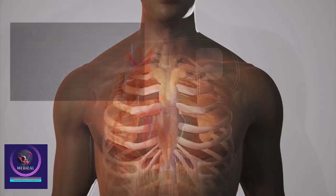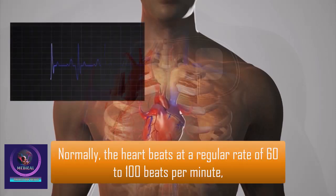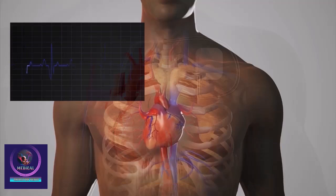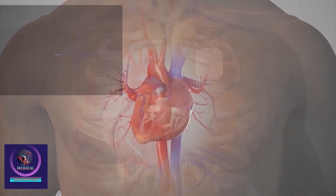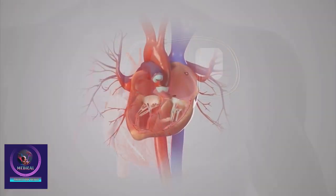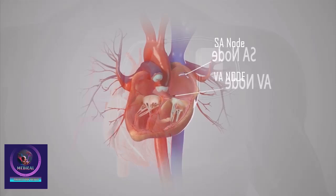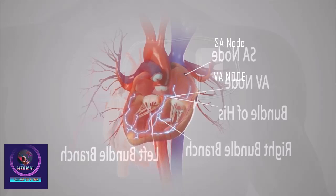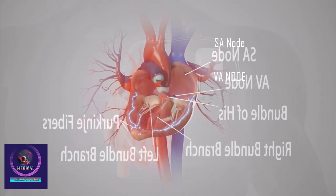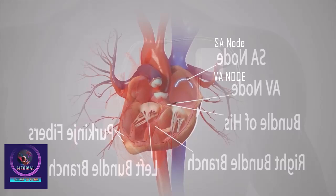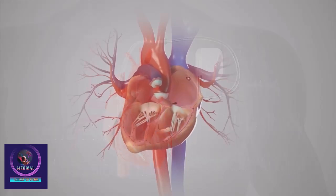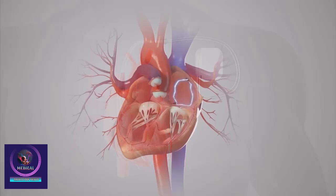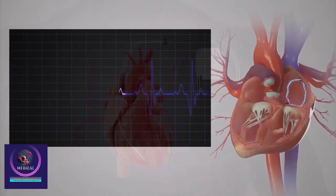Normally, the heart beats at a regular rate of 60 to 100 beats per minute, triggered by its own electrical conduction system. When this conduction system is working properly, the sinoatrial, or SA, node acts as the heart's natural pacemaker. The SA node generates an electrical impulse that travels to the atrioventricular, or AV, node, bundle of His, right and left bundle branches, and Purkinje fibers. Each time an impulse reaches the Purkinje fibers, it causes the atria and ventricles to contract, which creates a heartbeat.